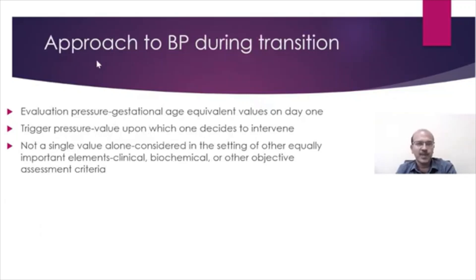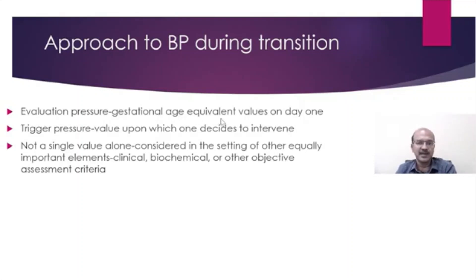The suggested approach to blood pressure during transition is to identify an evaluation pressure — essentially the gestational age equivalent value on day one as per the BAPM rule — where we evaluate the child carefully, looking at all the parameters discussed. There is also a trigger pressure, the level at which one decides to intervene, guided by other symptomatology alongside the blood pressure value.